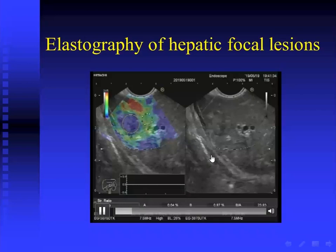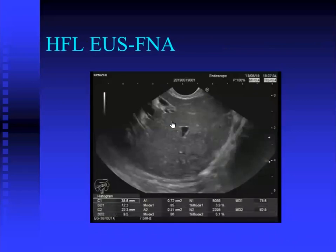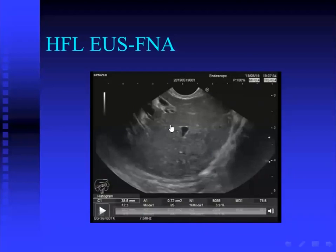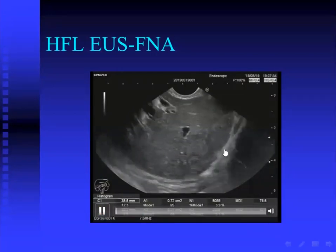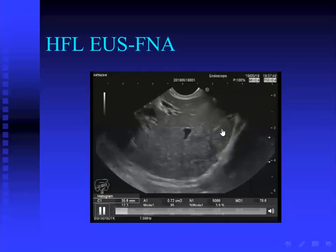Not only that — I can very simply perform FNA from all segments of the liver. It is easy to take FNA from any focal lesion in the liver, apart from segments five and six, which are somewhat difficult because of the intervening gallbladder between the echoendoscope and those segments. A lesion located in the sub-diaphragmatic area is somewhat difficult or dangerous to access by percutaneous route, whether ultrasound-guided or CT-guided, because here is the diaphragm and here is the heart — it is the dome of the liver.